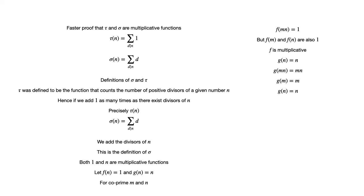g of mn equals mn and g of m equals m while g of n equals n. Once again g turns out to be multiplicative. With these two facts in hand,